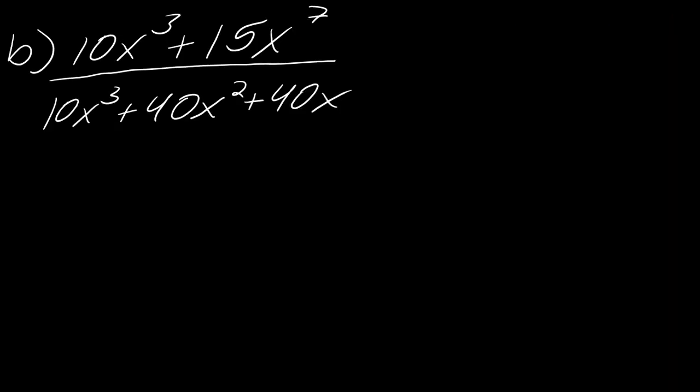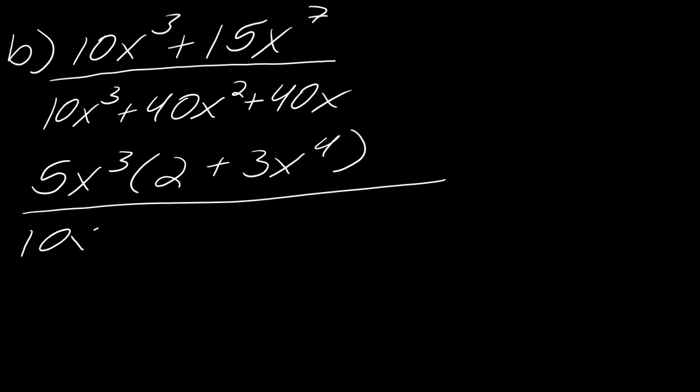Okay, and so for B, once again, we've got a little bit of funky factoring here. So notice in the top, I've got a GCF on top here. It looks like 5x cubed can be factored out. So that's going to leave me with 2 plus 3x to the fourth. Okay, and now let's see what's in the denominator. In the denominator, I can factor out looks like 10x, which will leave me with x squared plus 4x plus 4.